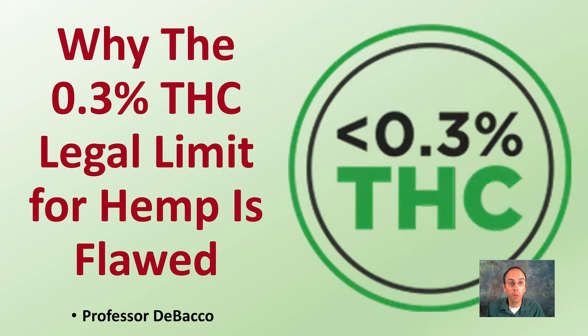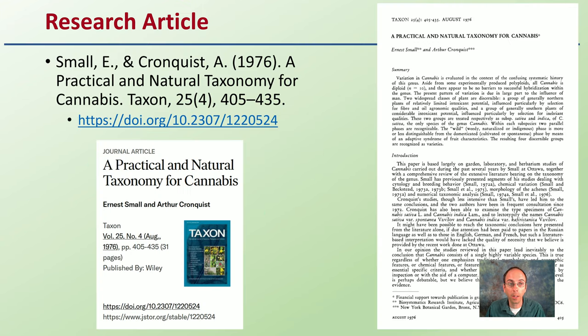This is something many growers are very well aware of. 0.3% — over or under that level for THC — creates a major distinction in their end product. But let's go over why that number is actually flawed.